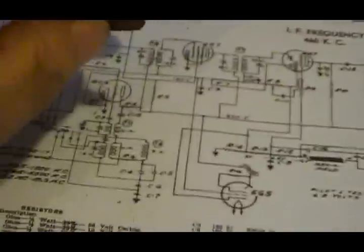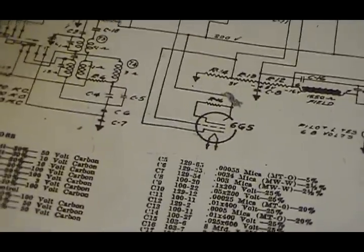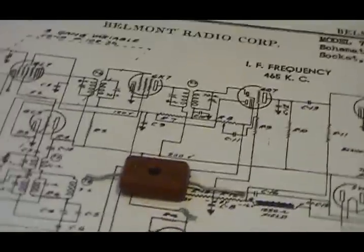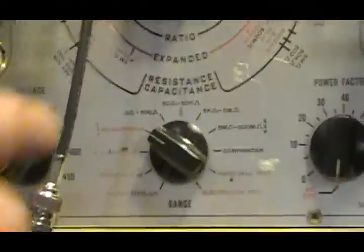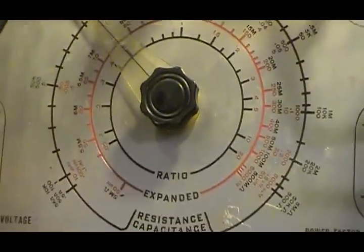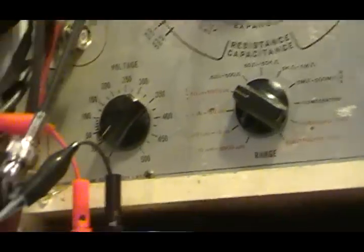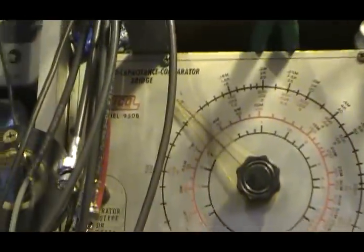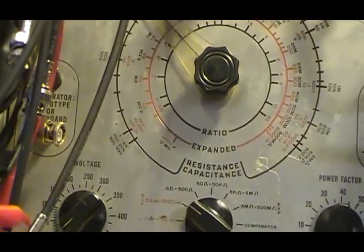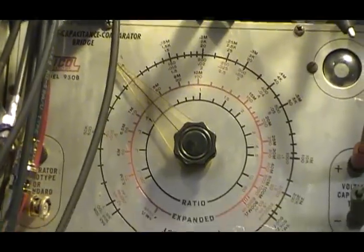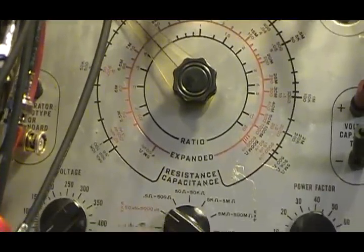What I do is I replace the paper caps, electrolytics, check the resistors, and I check these for leakage. Now, in order to do that, you need something like this Eico 950B capacitor tester. You can get a Heathkit, you can get a Knight kit, you can get Solar. They're almost a dime a dozen on eBay. They're literally, millions and millions of these things were made. So they're not really expensive, and I would suggest getting one.